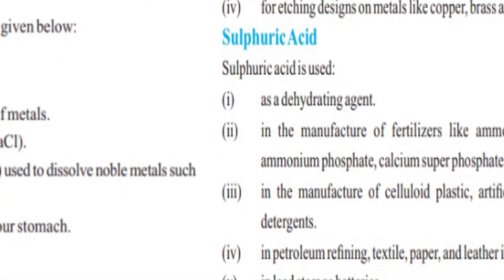Next is Sulfuric Acid, which is called the King of Chemicals. Use number one: it is used as a dehydrating agent. Use number two: in the manufacture of fertilizers like Ammonium Phosphate, Calcium Ammonium Phosphate, Calcium Superphosphate, etc. Like nitric acid, sulfuric acid is also used to make fertilizers. Use number three: in the manufacture of cellulite, plastic, artificial silk, paints, drugs, and detergents.